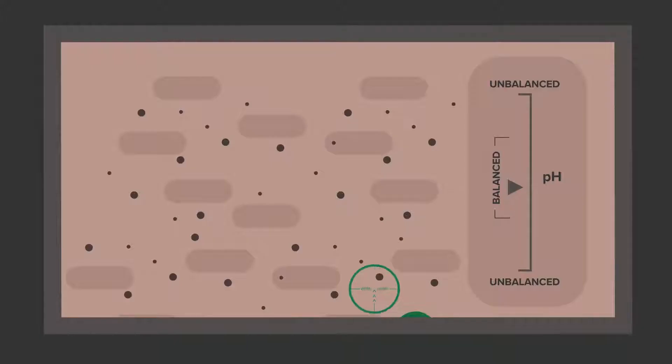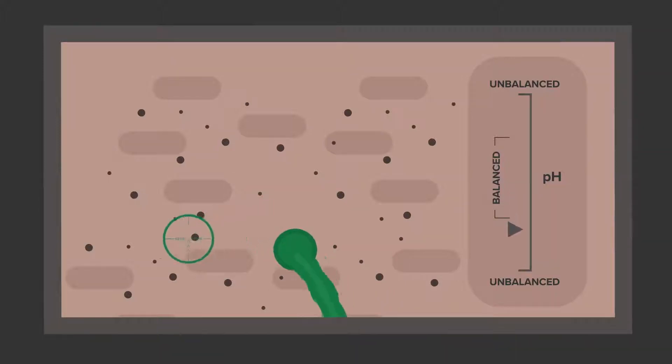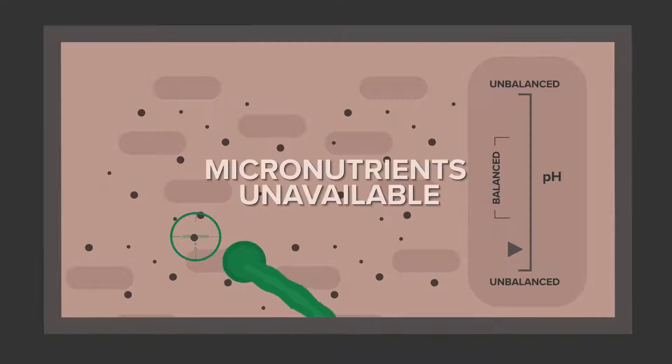If your soil pH is off, then you run into a lot of nutrient availability issues, and this ultimately is going to lower that crop's yield potential because it's not going to have everything that that crop needs.